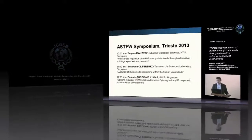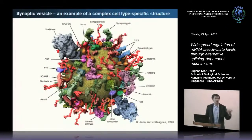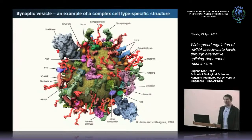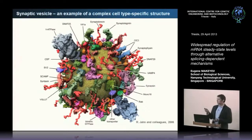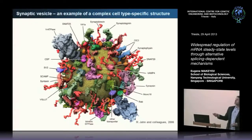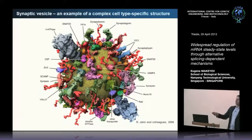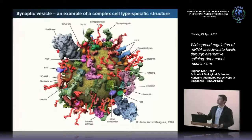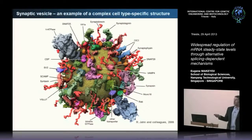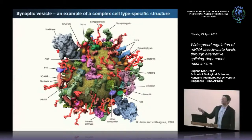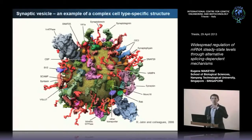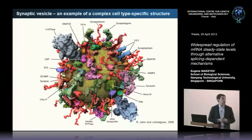I work on RNA biology subjects, but the big question that we have in mind when we do our RNA assays is this. This is a picture of a synaptic vesicle, which is a very complicated structure. This is an artist's representation of it, of course, but the real thing is even more complicated. There are a number of proteins decorating it, and they are not just decoration—they are functional things. Without the presence of all of these things, or almost all of them, the synaptic vesicle, which is a good example of a cell-specific organelle, would not be functional.